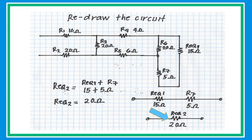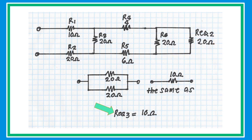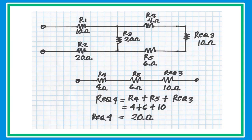Collapse the circuit and redraw again. In the new redrawn circuit, R6 (20 ohms) and R_eq (20 ohms) are connected in parallel with the same value, so take half to get 10 ohms. Collapse and redraw once more. Now R4, R5, and R_eq are connected in series — simply add the three resistors and substitute the values to get an equivalent resistance of 20 ohms.